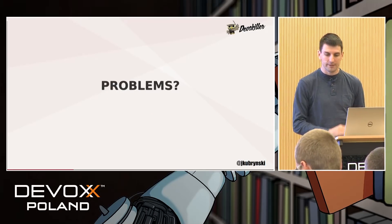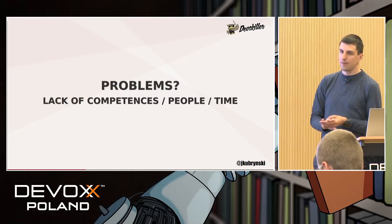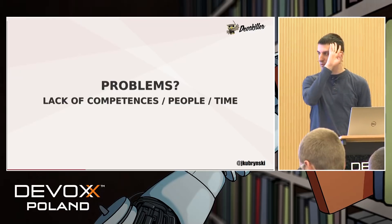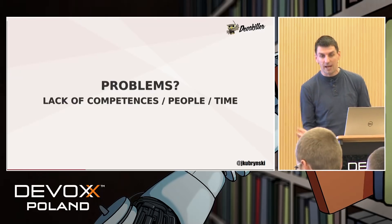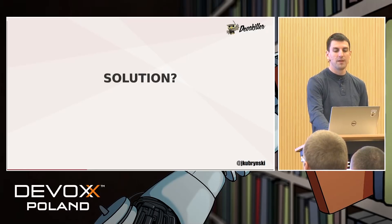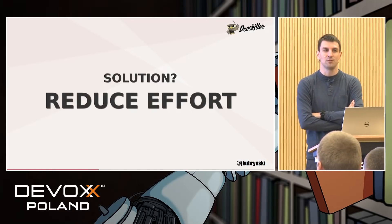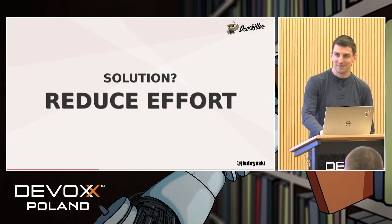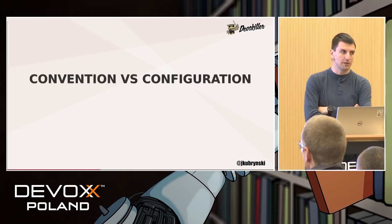So is it simple to do? Generally, there are three problems: lack of competences, people, and time — and you can choose any combination. There are problems with competences, with competences and people, with people and time, with all three, etc. So how can we solve it? Just try to do less. If you don't have time to do a lot of stuff, then do less. So there is an approach called convention over configuration.